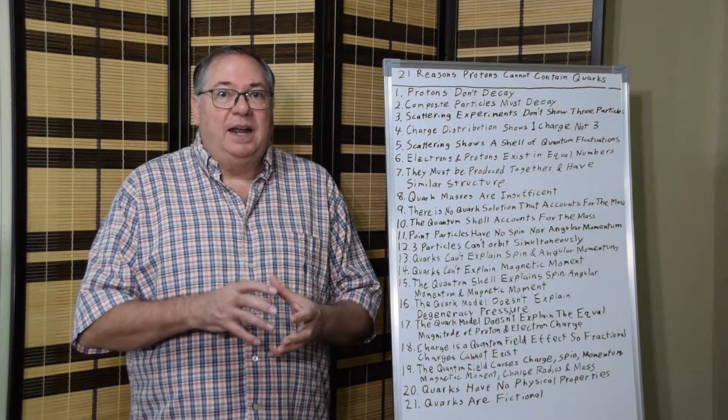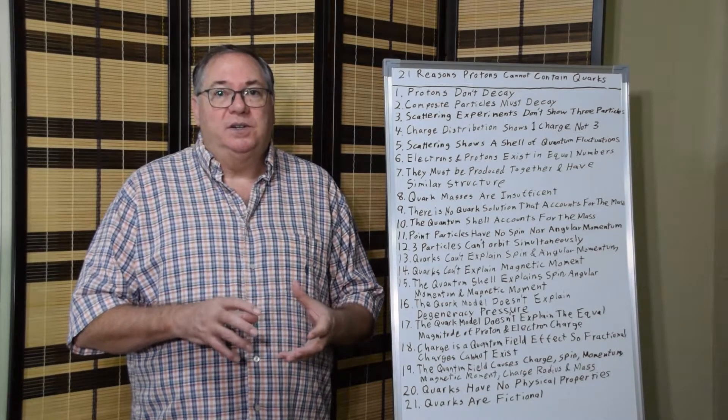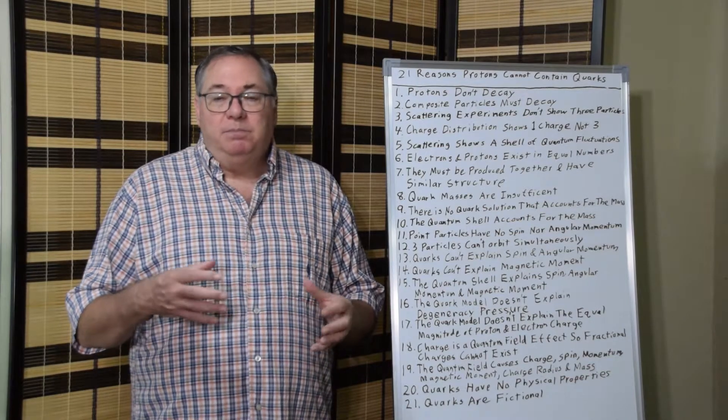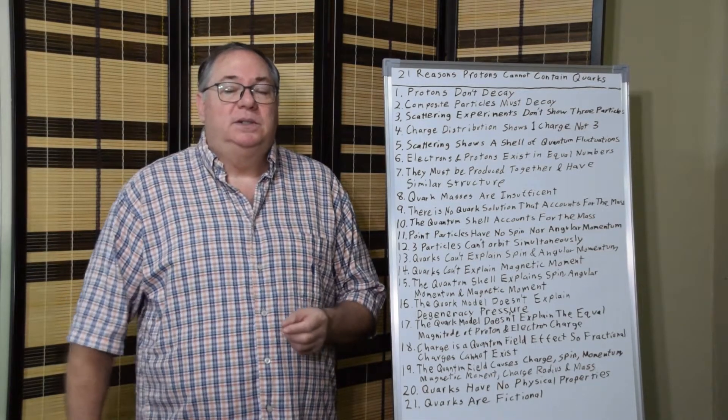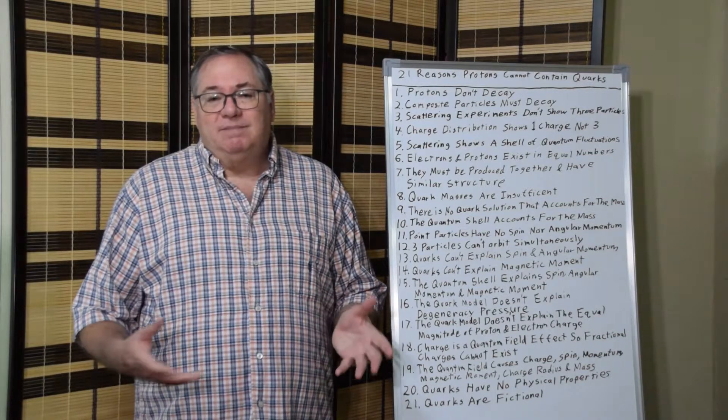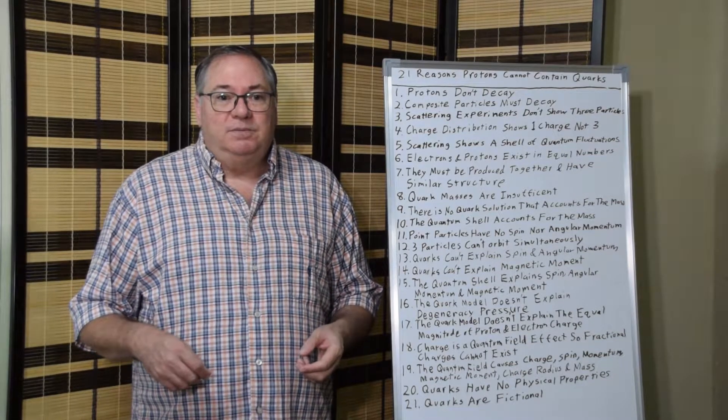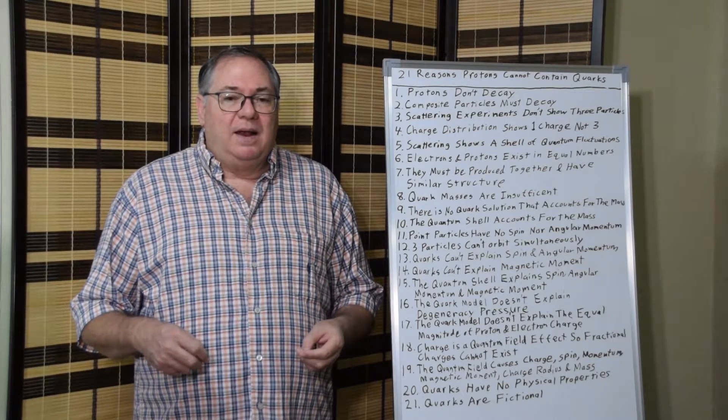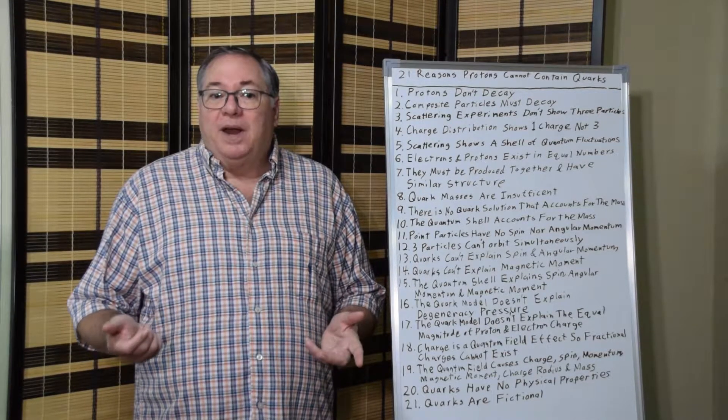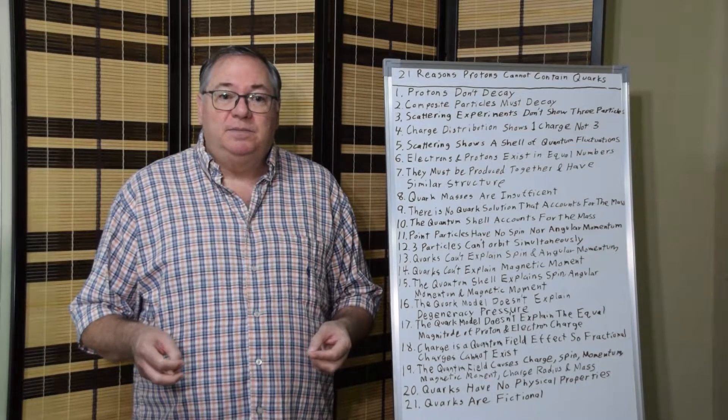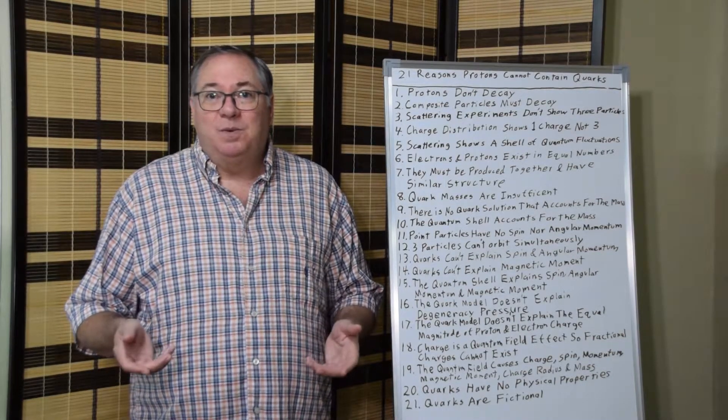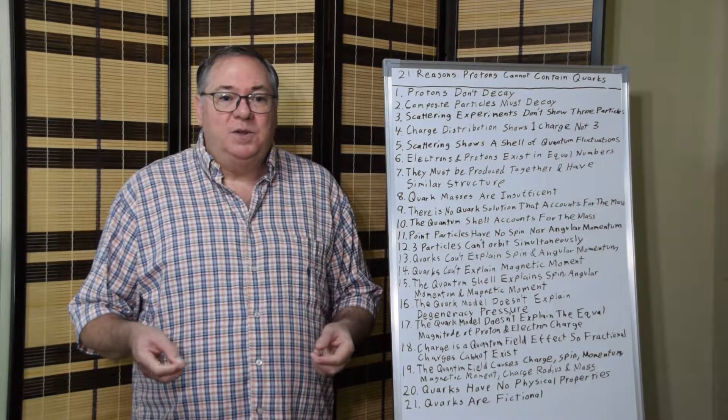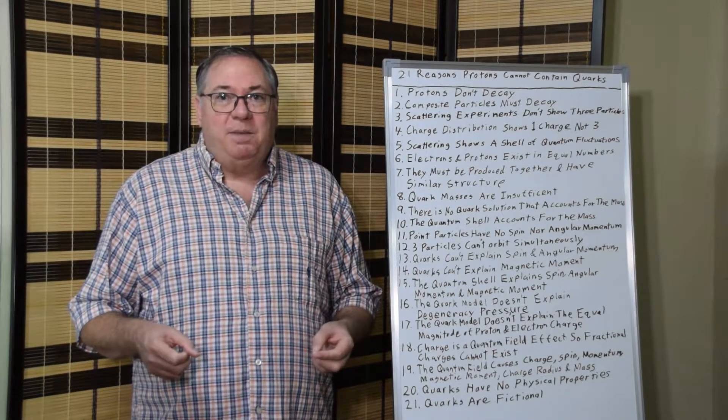And in that case, they have to have the same physical structure because they have to interact in some way that they're produced together in equal numbers. And so that invalidates the quark model right there. Then number eight, quark masses are insufficient. If you add up the masses of the quarks, it doesn't equal the mass of the proton. So the simple mass model doesn't work.